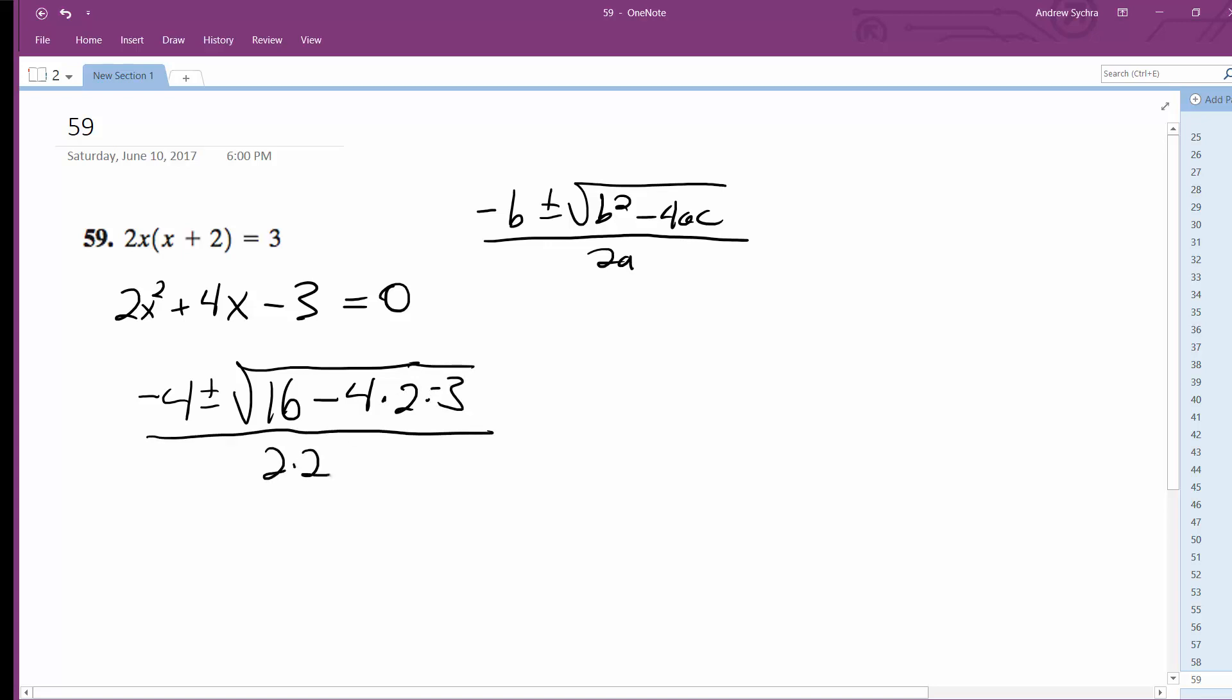This is all over 2a, which is 2 times 2. So this ends up being negative 4 plus or minus the square root of 16 plus 24, and then this is all over 4.